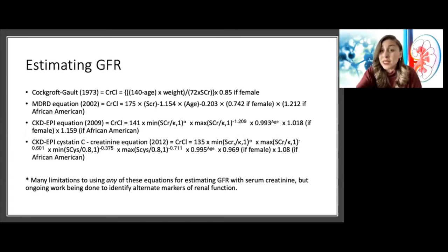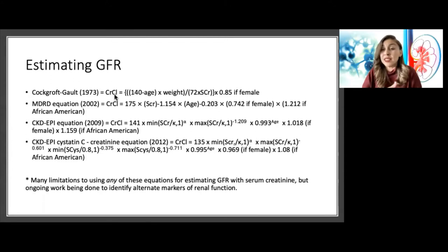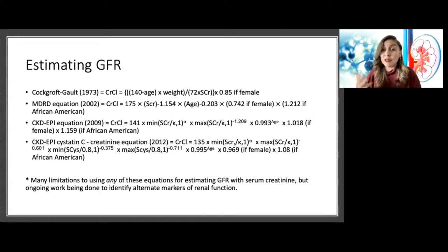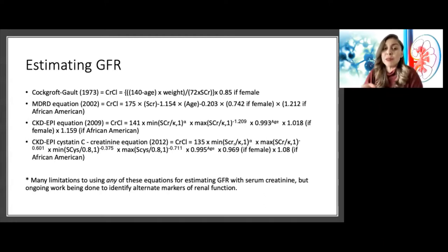Population studies starting in the seventies created complex equations where serum creatinine measurements were compared to inulin and also iothalamate infusions. These complex algorithmic equations were created to output an estimation of GFR. You'll see that over time the first equation to estimate GFR was developed in the seventies, and then it took almost 30 years to get the next one.